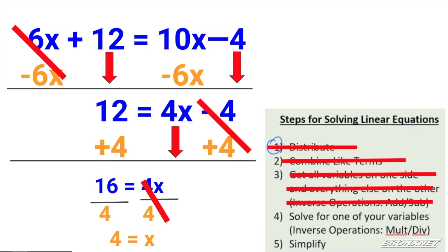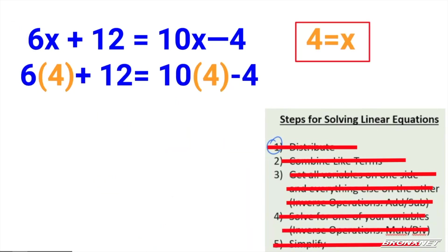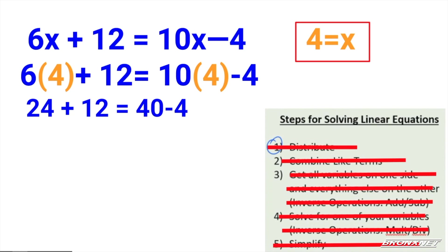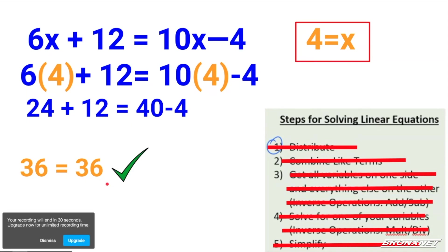Once we've solved for a variable, we always want to go back and substitute in to see if the statement is true. Wherever we see an x in the original equation, we substitute with 4. We get 6 times 4 plus 12 equals 10 times 4 minus 4, which is 24 plus 12 equals 40 minus 4. 24 plus 12 is 36, and 40 minus 4 is 36. The statement is true, so therefore it works — that's how you know you have the correct answer.